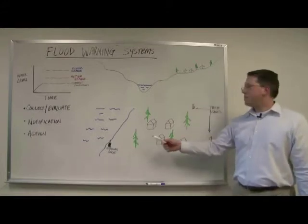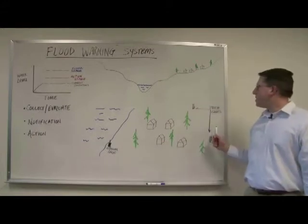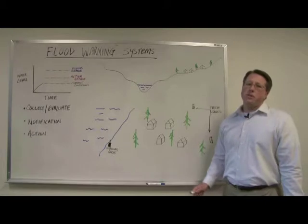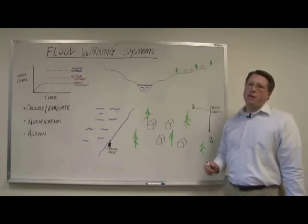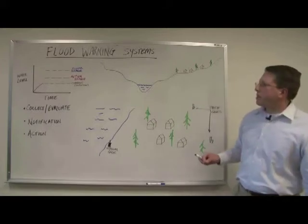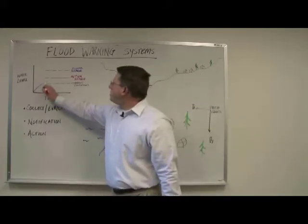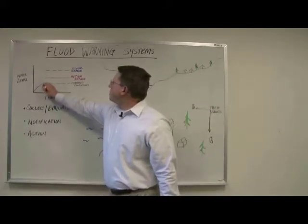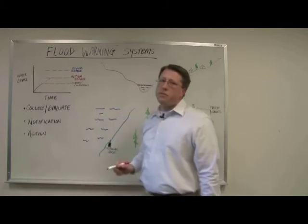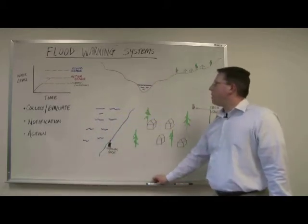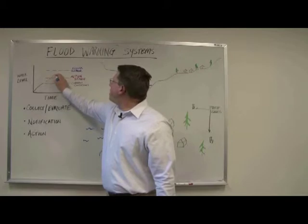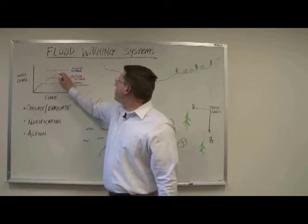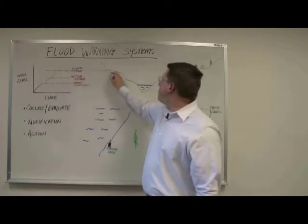Stream gauges and precipitation gauges are used to collect information about current conditions, and in conjunction with radar weather data and modern modeling techniques, the National Weather Service issues forecasts of future flood levels. As those flood levels reach a height of known impact, a notification is made.